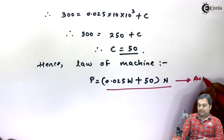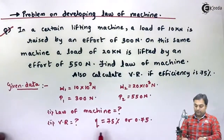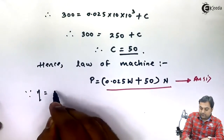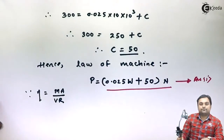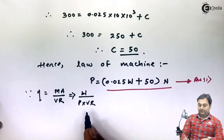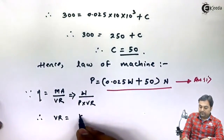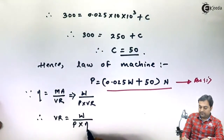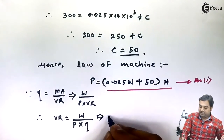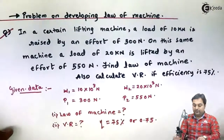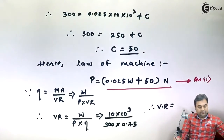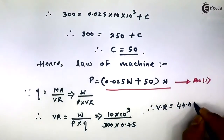For the second part, we calculate VR given efficiency is 0.75. Since efficiency = MA / VR = (W / P) / VR, rearranging gives VR = W / (P × efficiency). Taking the first case: W = 10 × 10³ Newton, P = 300 Newton, and efficiency = 0.75. Therefore VR = (10 × 10³) / (300 × 0.75) = 44.44. This is the second answer.